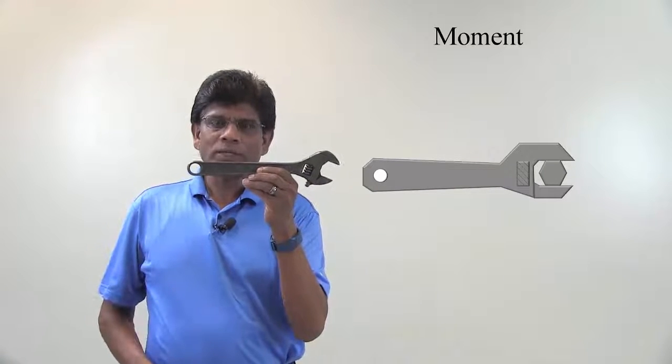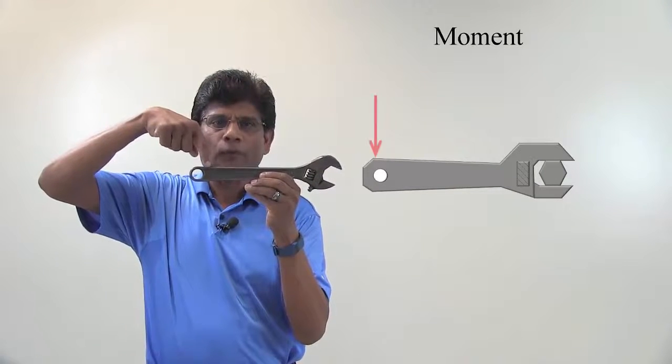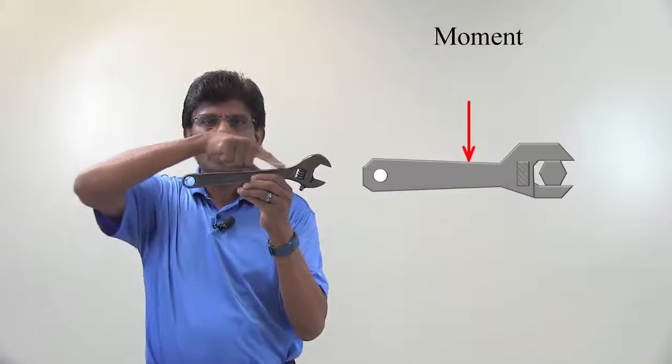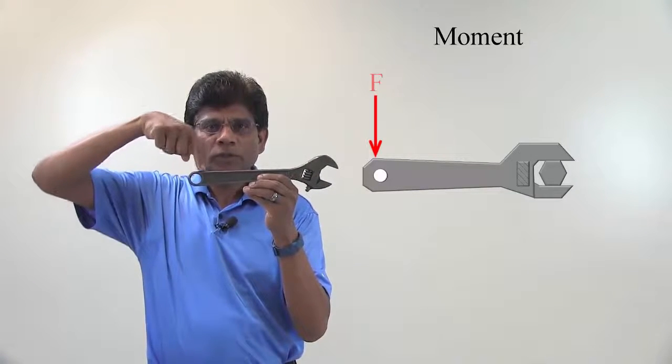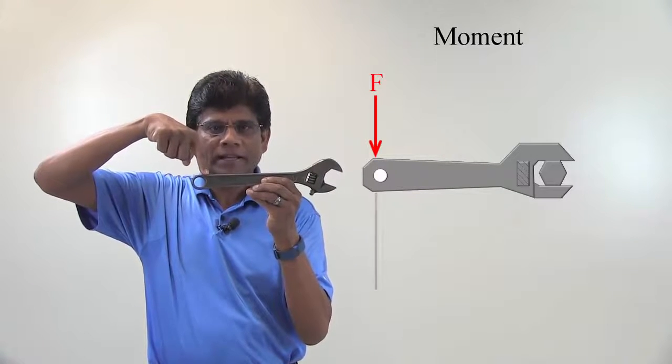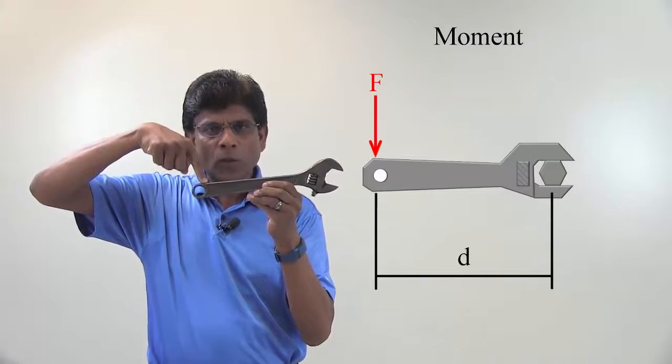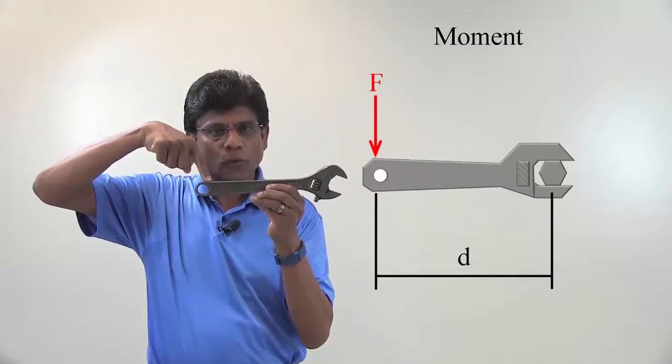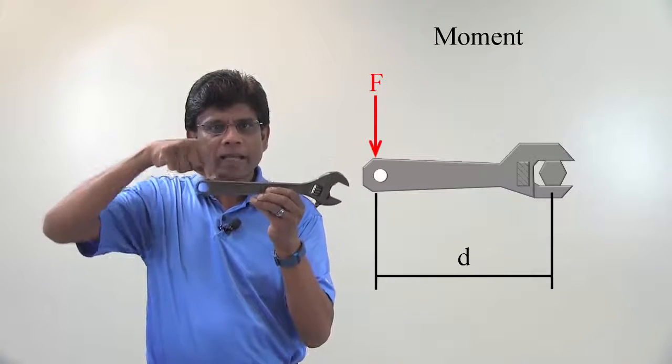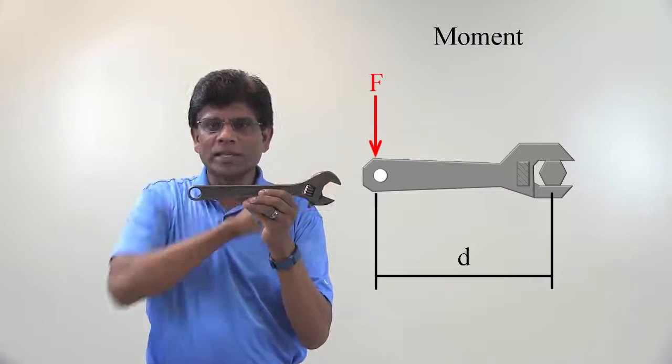If I want to use it, I have to apply a force somewhere here on the handle. This force is a push applied at a distance from the center of rotation. This push creates what I call the tendency of the force to rotate the body about an axis that passes through the center.